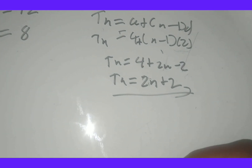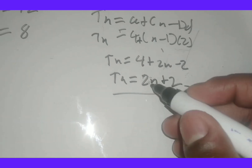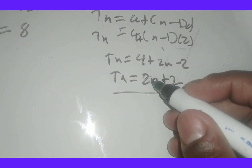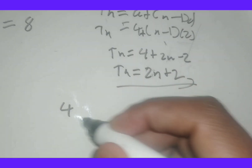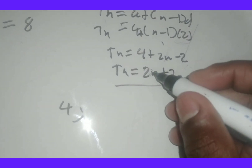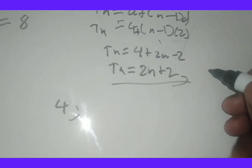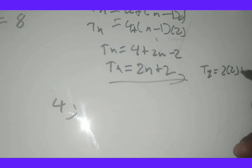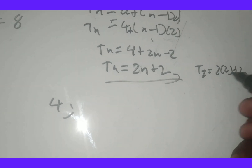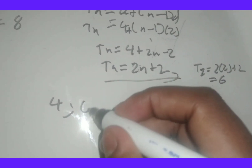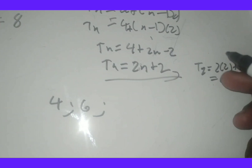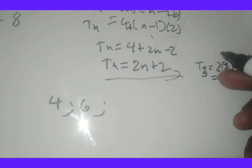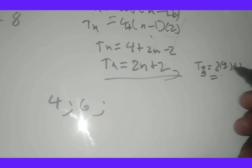Now let's find the first three terms. t1: substitute n equals 1 — 2 times 1 plus 2 equals 4. t2: 2 times 2 plus 2 equals 6. t3: 2 times 3 plus 2 equals 8. So the first three terms are 4, 6, and 8.